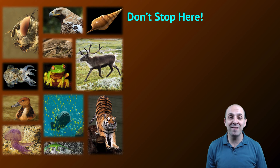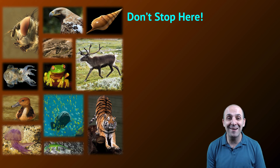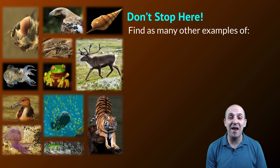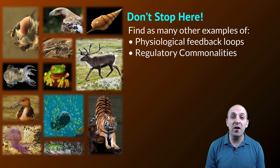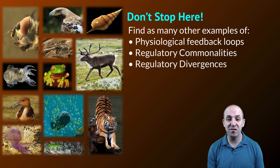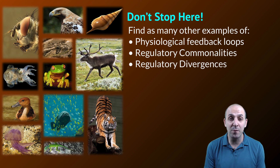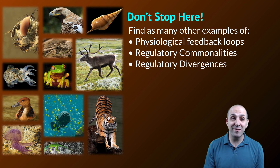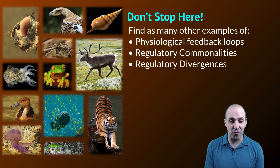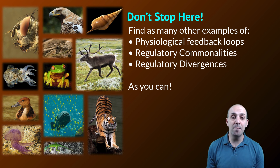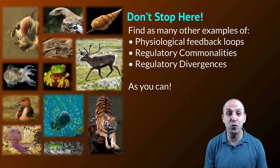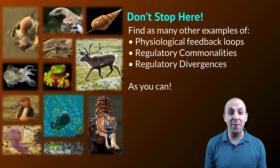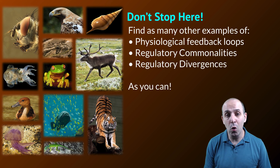These were just a couple of examples of physiological regulation and how common ancestry and divergence play out. It's important for you not to stop here. Take a moment right now and find as many other examples as you can of physiological feedback loops that work in yourself or in other organisms, regulatory commonalities among different lineages, and regulatory divergences as a result of different environments. The more you can do this, the better off you'll be at understanding how physiology results from feedback loops driven by the particulars of the evolutionary history of organisms.